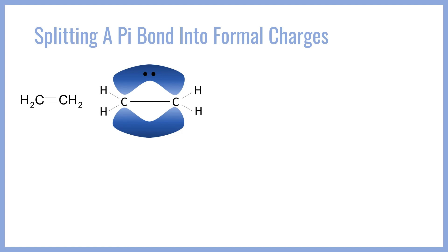If we were to show electron arrow pushing, we would say that this second bond — the pi bond — is going to move onto, say, the right-hand carbon. The arrow indicates that the two electrons in that bond are going to move onto the right-hand carbon's p orbital. From an orbital perspective, that means these two electrons are going to move onto this carbon's p orbital and the pi bond is going to break. Typically when we do this, we don't circle the bond, so the electron pushing arrow will just look like this.